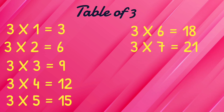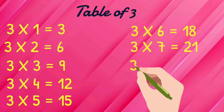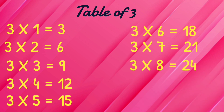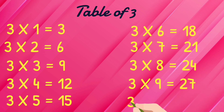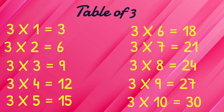Three sevens are twenty-one. Three eights are twenty-four. Three nines are twenty-seven. Three tens are thirty. Video पसंद आए तो वीडियो को लाइक करें। Bye-bye.